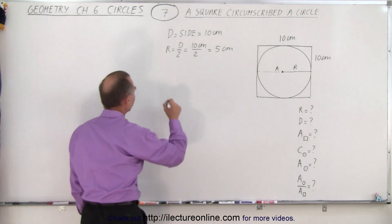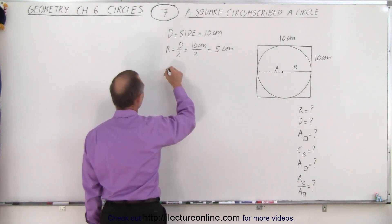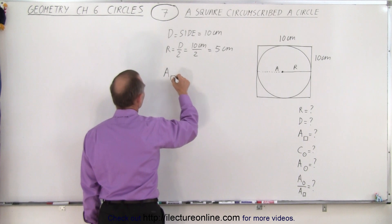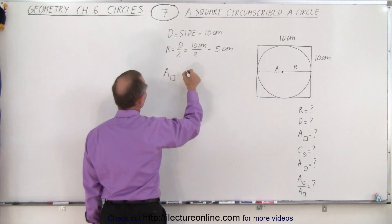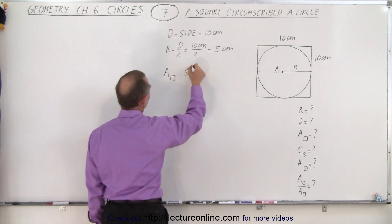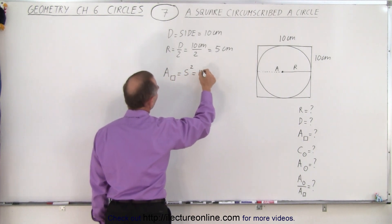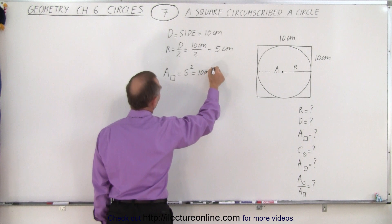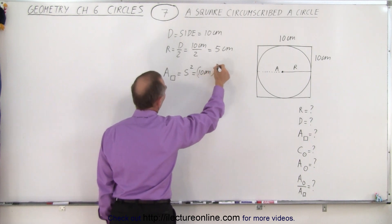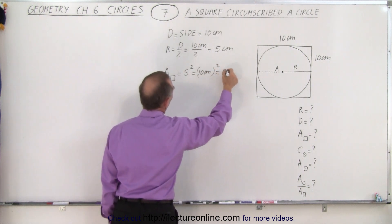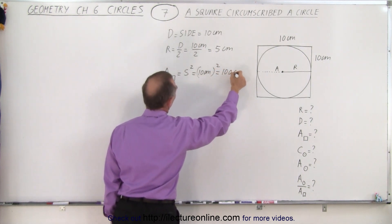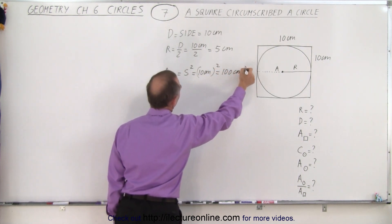To find the area of the square, that's easy enough. The area of the square is equal to the side of the square squared, which is 10 centimeters squared, which is equal to 100 square centimeters.